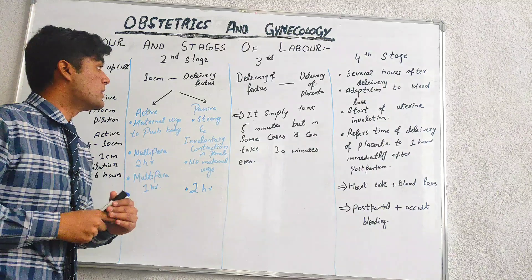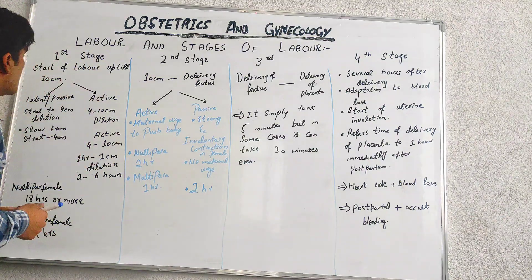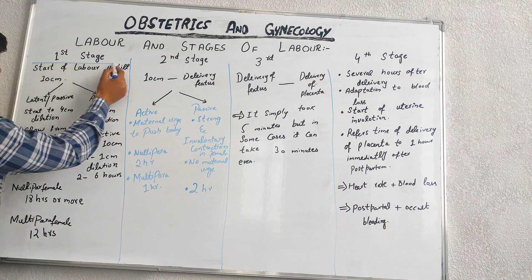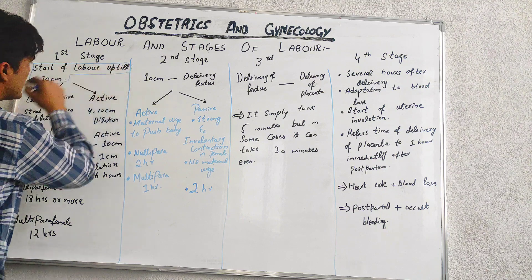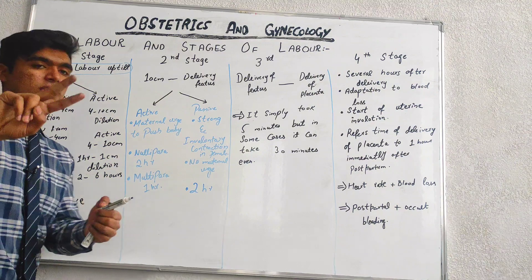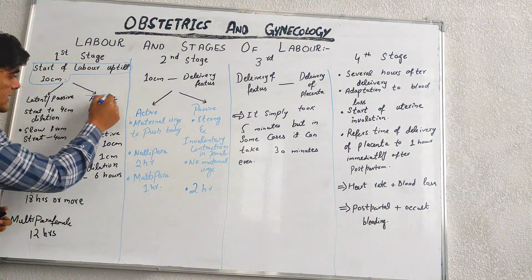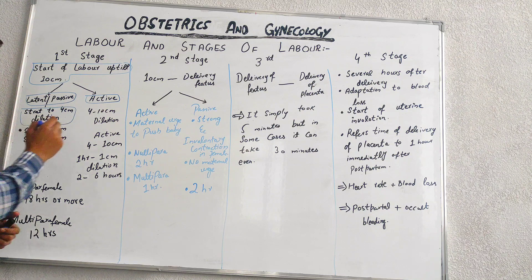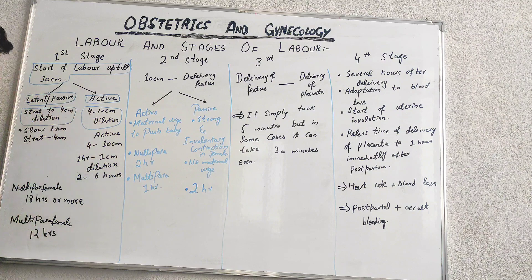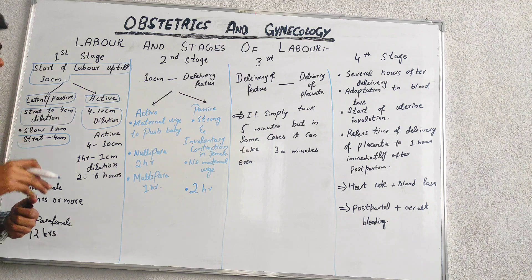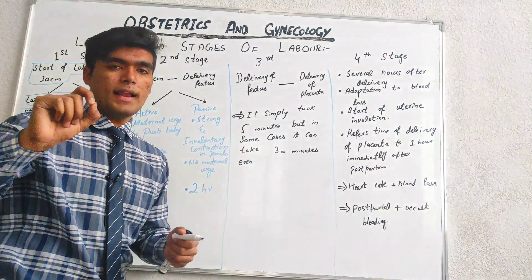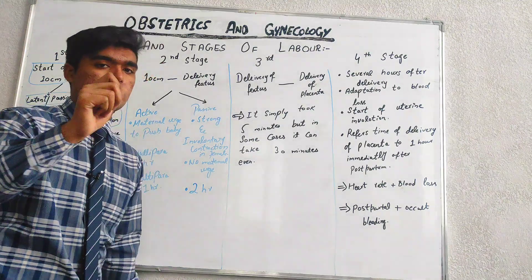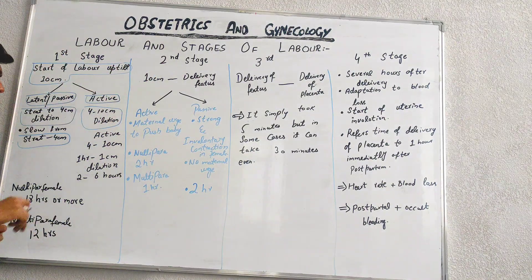Now talking about the stages of labour, we have four stages. The first stage is basically from the start of labour until 10 centimetre dilation. It has two further divisions — one is active and the other is latent or passive. Latent or passive is from start to 4 centimetre dilation, and active is from 4 to 10 centimetre dilation. The latent phase is a slow process, while the active phase is a faster process of dilation from 4 to 10 centimetres.